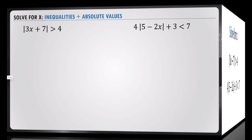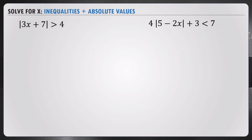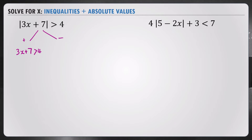Let's start with the first one. Here we have the absolute value of 3x plus 7 is greater than 4. Remember, for absolute values we have to split it into positive and negative. So let's do the positive first, which is 3x plus 7 is greater than 4.